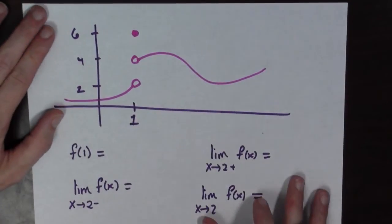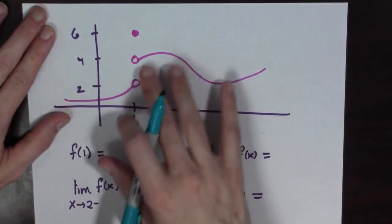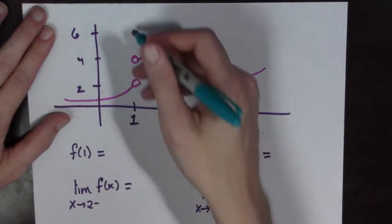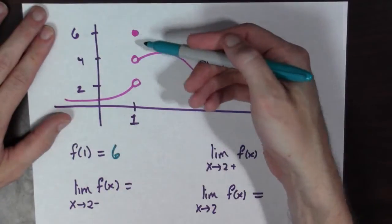Here's another common sort of problem. In this case, the plot of our function is right here. And so f of 1, well f of 1 is 6. We have to go all the way up to this point right here.